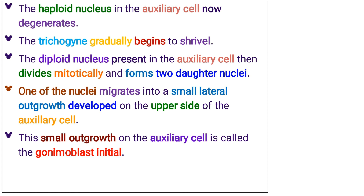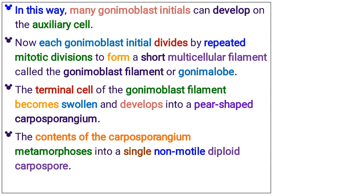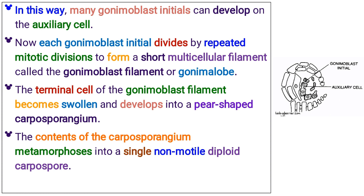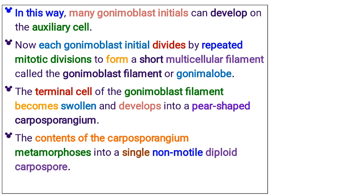The diploid nucleus present in the auxiliary cell then divides mitotically and forms two daughter nuclei. One of the nuclei migrates into a small lateral outgrowth developed on the upper side of the auxiliary cell. This small outgrowth on the auxiliary cell is called the gonomoblast initial. In this way, many gonomoblast initials can develop on the auxiliary cell. Each gonomoblast initial divides by repeated mitotic divisions to form a short multicellular filament called the gonomoblast filament, or gonimolobe.